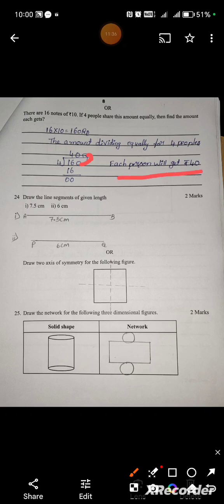Draw the line segment of the given length 7.5 cm using a scale. Draw 2 axes of symmetry for the following figure using dotted lines. Draw the network of the following 3 dimensional figure. You should practice cube, cuboid, cone, triangle pyramid networks. Here the solid shape cylinder network.